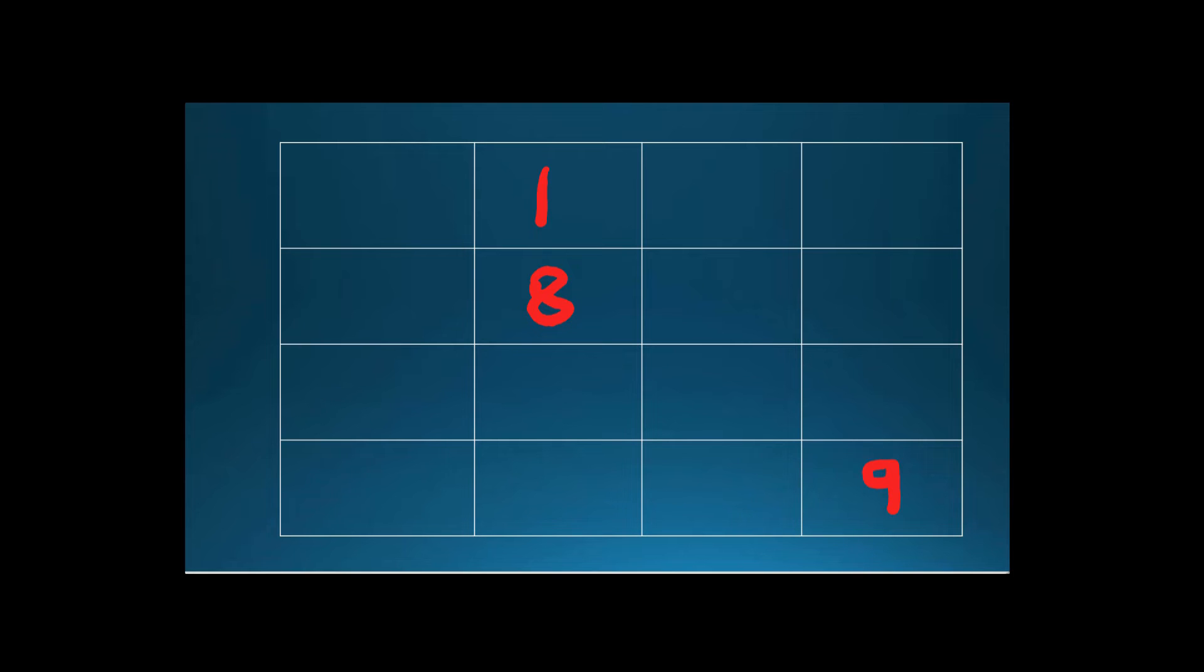So in the same line, you take 27: 2, 7, 27. And 9, 3s are 36. So here, you take 36: 3, 6, 36.